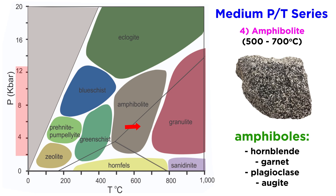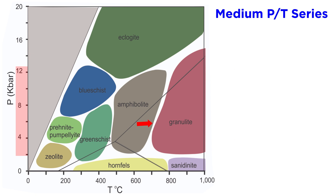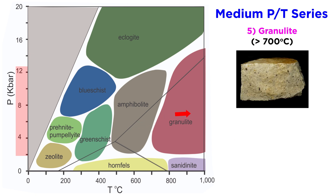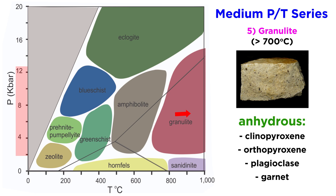Common coexisting minerals in the amphibolite facies are plagioclase and augite. Finally, we reach the granulite facies, which occurs from 700 degrees Celsius all the way up to the onset of melting. It is characterized by a largely anhydrous mineral assemblage that commonly includes clinopyroxene, orthopyroxene, plagioclase, and garnet.